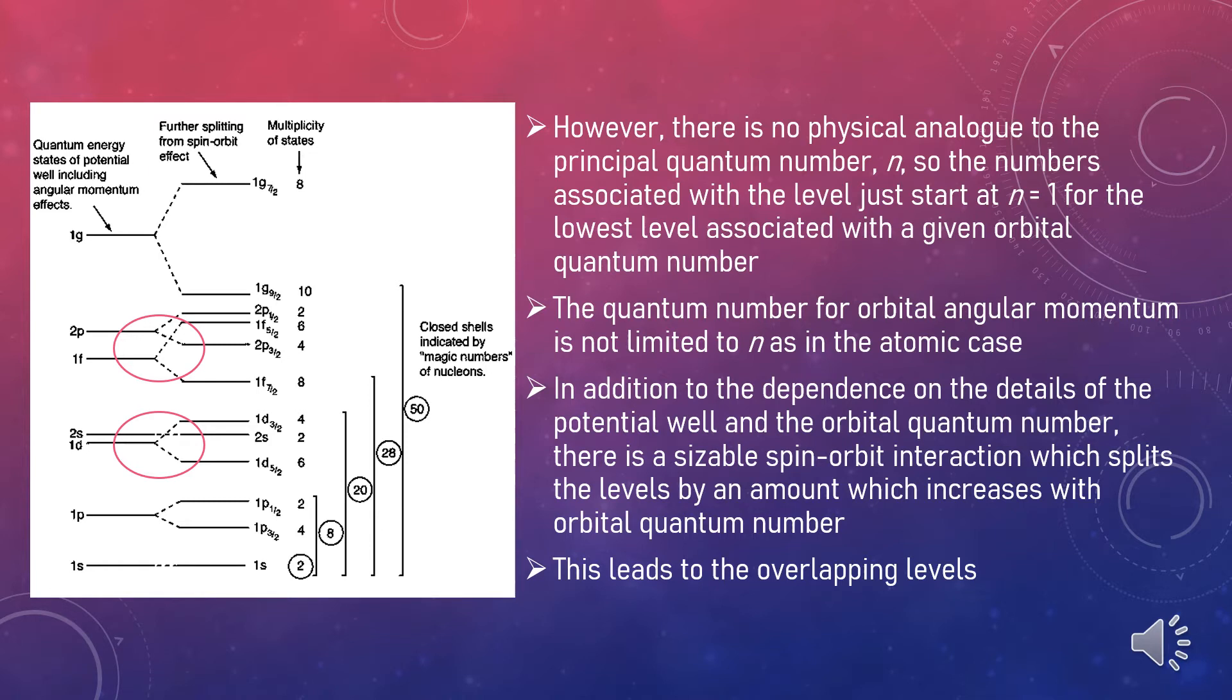The subscript indicates the value of the total angular momentum j and the multiplicity of the state is 2j plus 1. The contribution of a proton to the energy is somewhat different from that of a neutron because of the Coulomb repulsion, but it makes little difference in the appearance of the set of energy levels. With this set of identified nucleus states and the magic numbers, we can predict the net nucleus spin of a nucleus and represent its nucleus state based on the identification of the level of the odd nucleon in the order of states shown in the diagram.